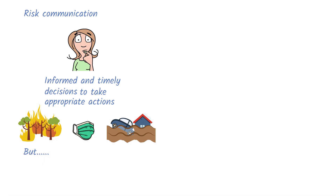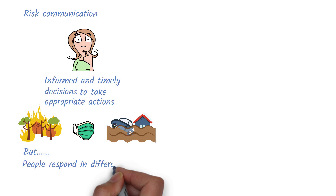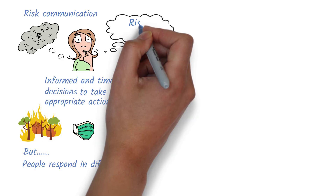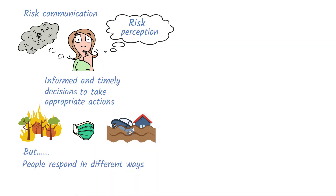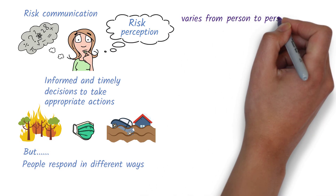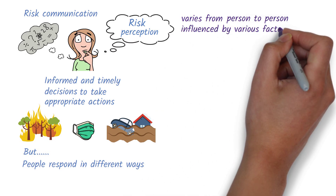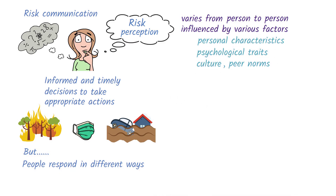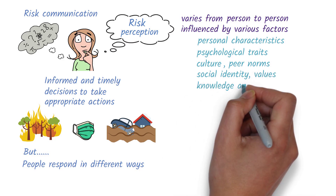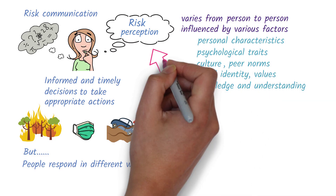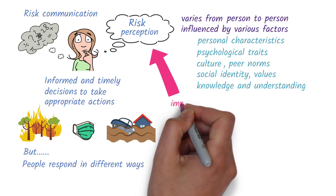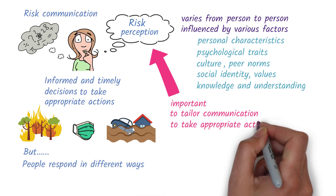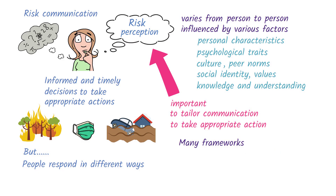People respond to risk in very different ways. The response is shaped not only by scientific facts or statistics, but by how they perceive the risk itself. This perception can vary significantly from person to person and is influenced by various factors, such as personal characteristics, psychological traits, culture, peer norms, social identity, values, and the level of knowledge and understanding about the risk. Understanding risk perception is important because it helps tailor communication that encourages people to take appropriate action. There are many frameworks to understand risk perception.